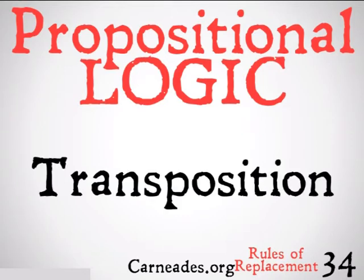First up is something called transposition. Transposition is basically going to be the commutativity for implication, but it's going to have some bells and whistles on it.